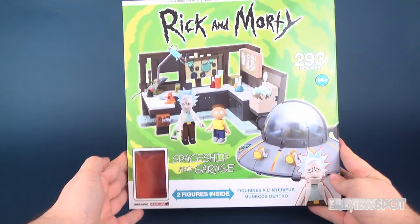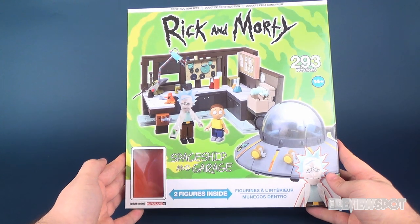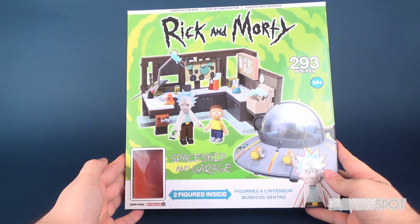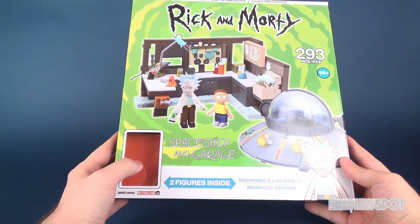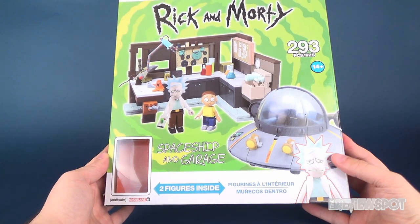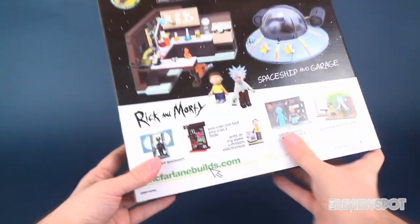Hey guys, today's video we're going to be checking out the McFarlane Toys Rick and Morty build set. This is the spaceship and garage, it has 293 pieces, it's recommended for ages 14 and up, and comes with two figures. You will not see a figure down below, I've already built this. Two figures inside: you get yourself a regular Rick and regular Morty. Spin around the back of the package.